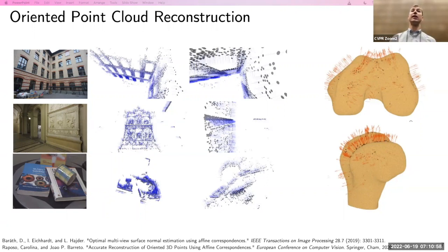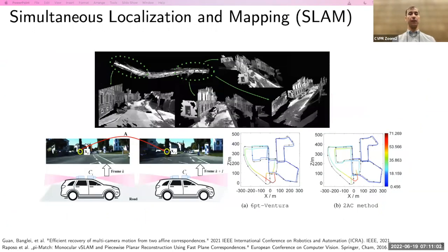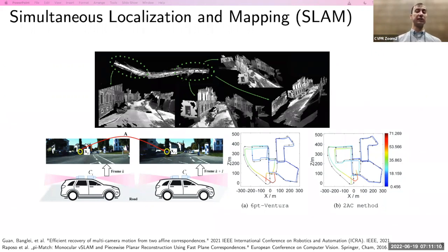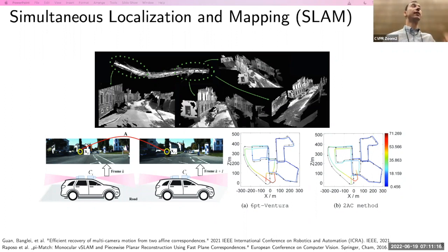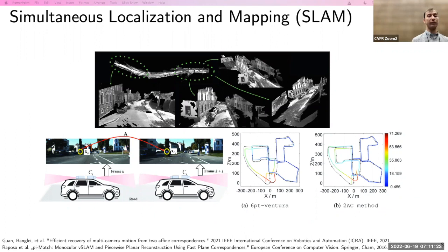Another example is oriented point cloud reconstruction of a bone structure. We can also do SLAM — simultaneous localization and mapping. We have solvers for generalized camera pose estimation where, with a vehicle-mounted sensor camera system, we can estimate the vehicle's pose from just two affine correspondences, compared to the six-point method.